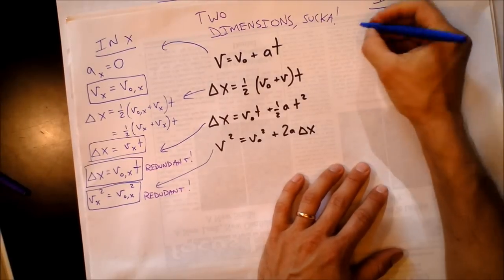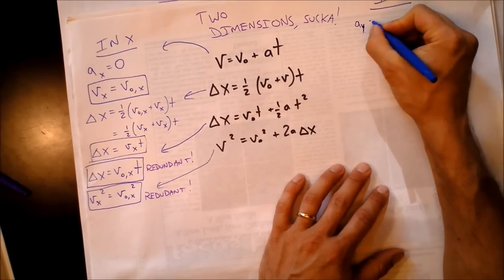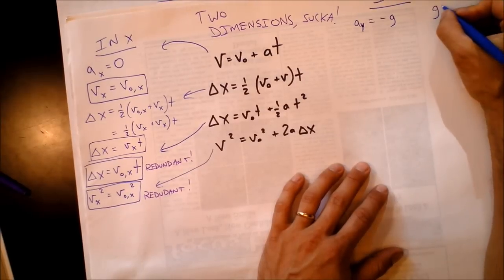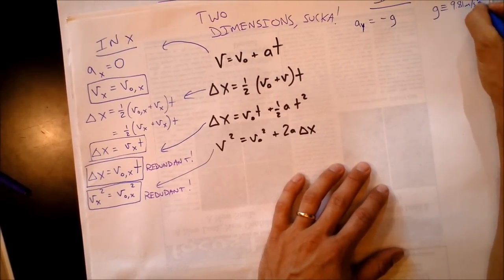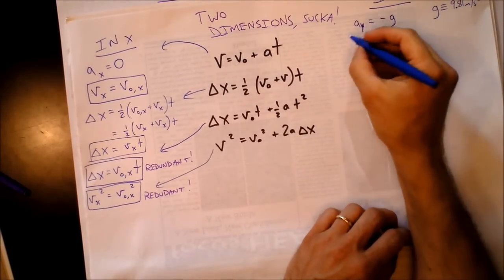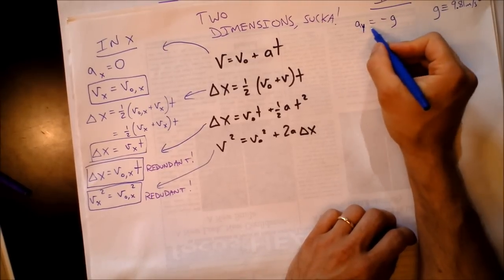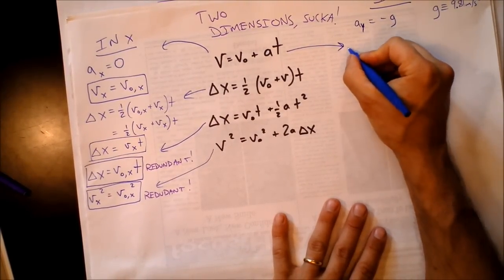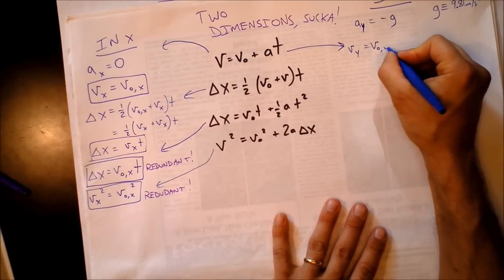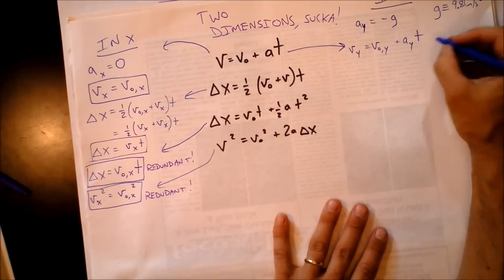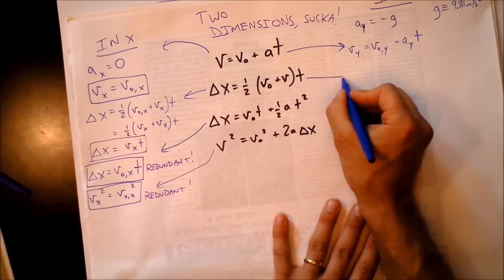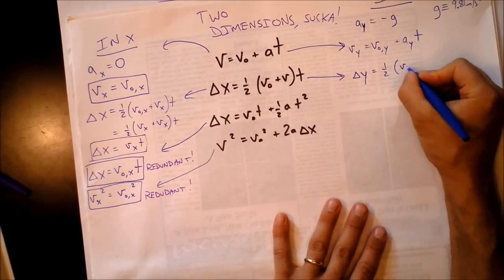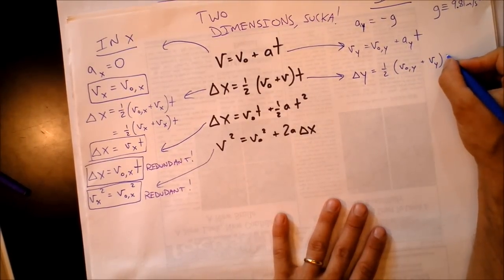The y direction is a lot more interesting. In y, the acceleration is negative g — approximately negative 9.81 meters per second squared on Earth's surface. We take all four equations and write them with y subscripts. So: v_y equals v_naught_y plus a_y times t. And delta y equals one half times (v_naught_y plus v_y) times t.